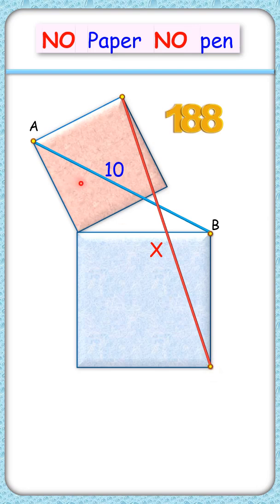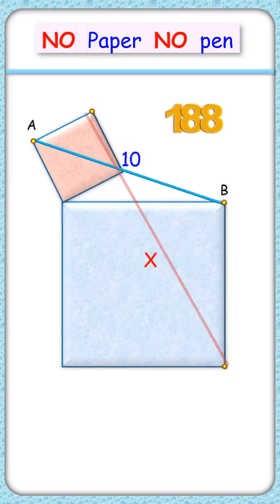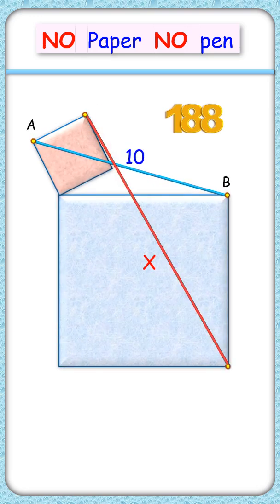Let's reduce the size of the top square and correspondingly increase the size of this blue square. This figure still fulfills all the original conditions of the question and thus the value of x should not change.